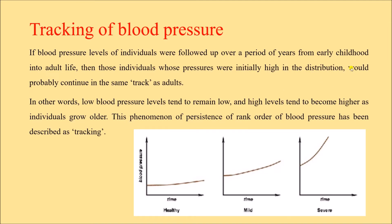Next is tracking of blood pressure — we follow up the blood pressure of an individual from early childhood into adulthood and elderly life. If a person's blood pressure is low in early childhood, it tends to remain low throughout life. On the other hand, if blood pressure is high in early childhood, it tends to remain high. Low levels remain low and high levels become higher as individuals grow older. This phenomenon — the persistence of rank order of blood pressure — is described as tracking.